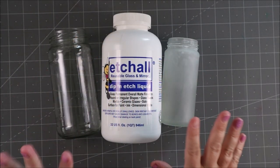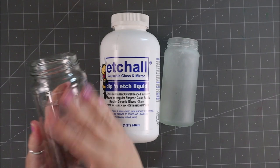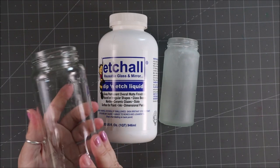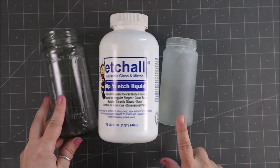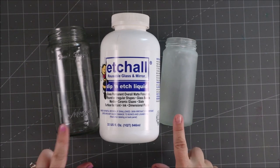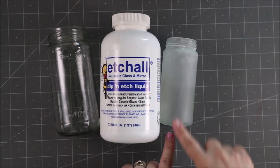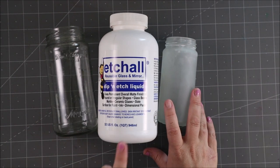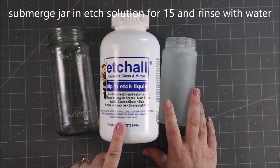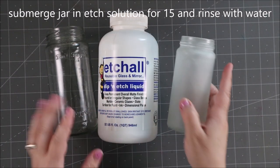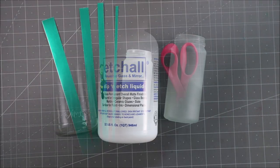The first step is to clean and rinse your jars and you want to get the labels off. There are lots of different ways to do your labels, so make sure you get a nice clean jar. For my smaller jar, I used the Etch All Etching Dip and Etch Solution to make it frosted, just something a little bit different. Now it's time to add our vinyl.